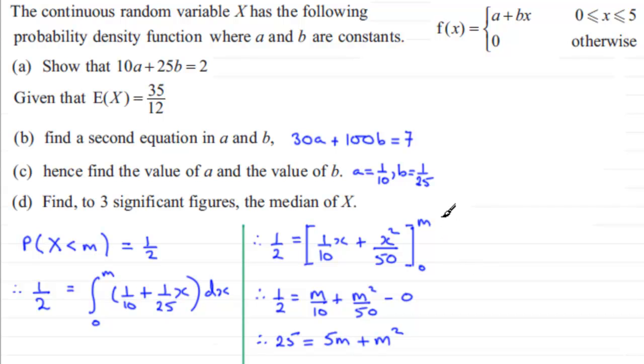So we've got a quadratic equation here. And like all quadratic equations, we need to rearrange it, make it equal to 0. So I'm going to subtract 25 from both sides. So we therefore have m squared plus 5m minus 25 equals 0. Now it says find the value of the median to three significant figures. So I doubt whether this is going to factorise. It looks like we're going to need to use the quadratic formula.